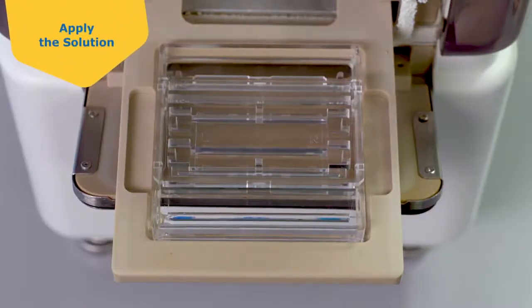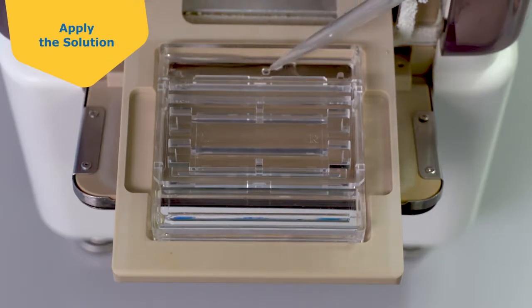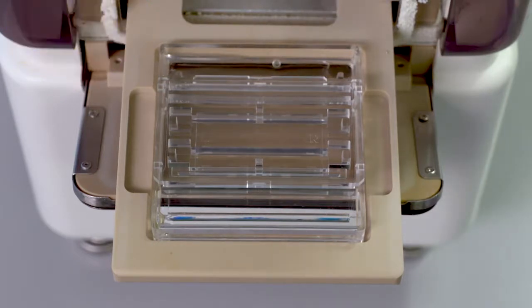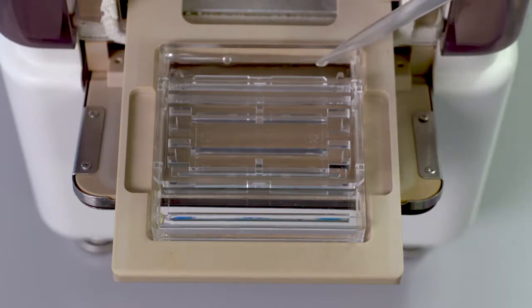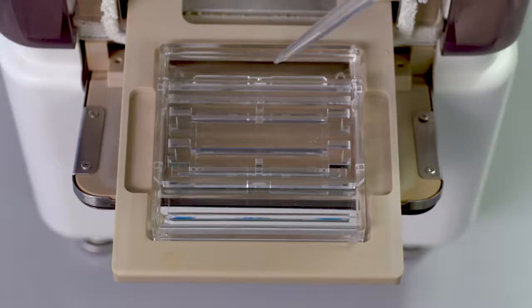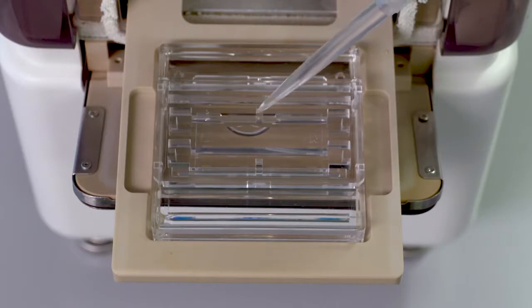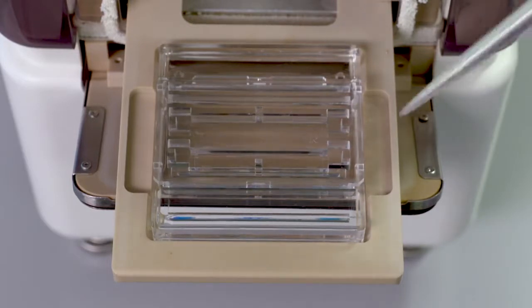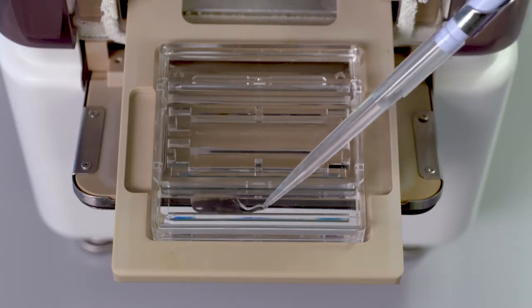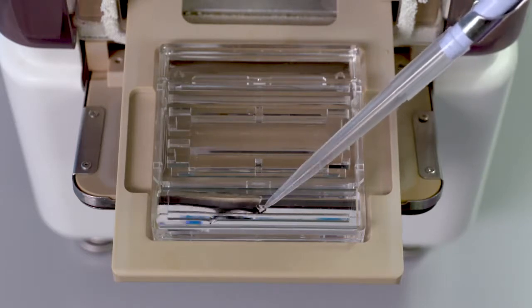Load reagents into the Solution Chip Plus. First, add cathode buffer to the groove at the cathode side of the PAGE chip. Then apply DI water to the hole in the center of the chip. Next, apply anode buffer to the anode side of the PAGE chip.